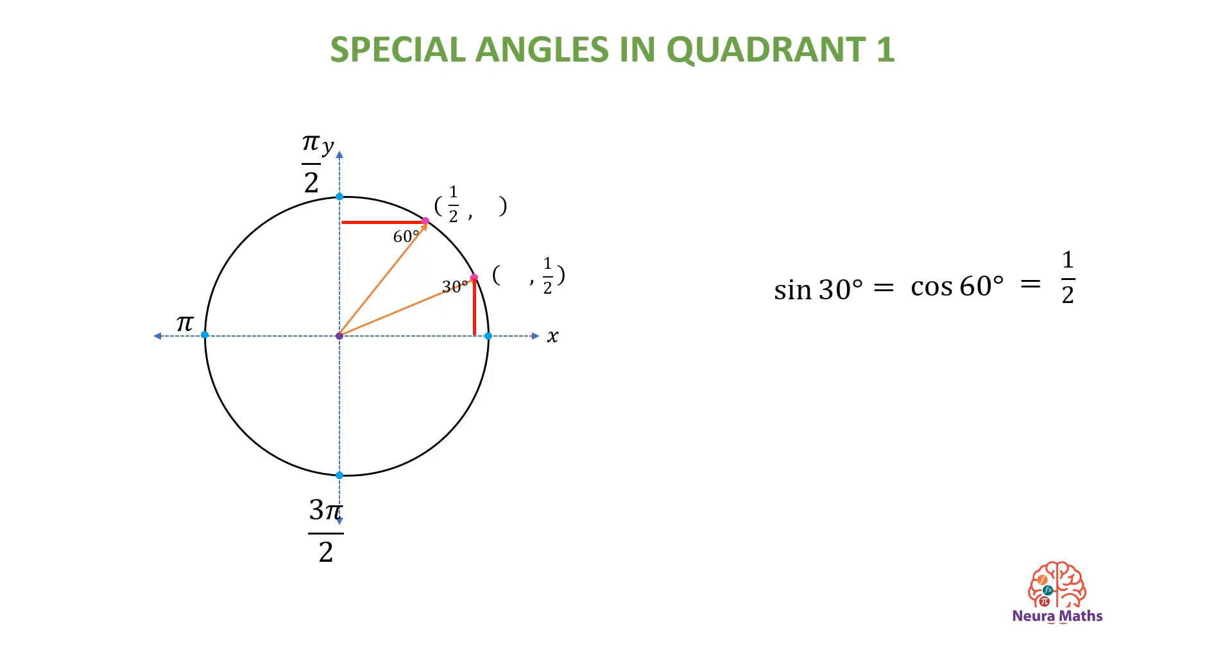What is the cosine of angle 30? The cosine of angle 30 is root 3 over 2. What is the sine of angle 60? The sine of angle 60 is root 3 over 2. We also notice that the cosine of angle 30 is equal to the sine of angle 60.